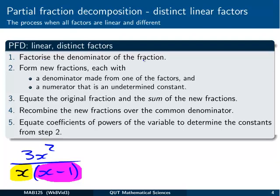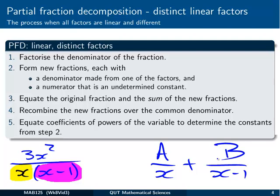So the process goes that we factorize the denominator, something like this. And then we form new fractions, each with a denominator made from one of those factors. So we'd have something over x and something over (x-1). And we're going to try to add them together. And when we have these linear distinct denominators, we have a constant on the top. A constant that we don't know what is yet, A and B let's call it. And our plan is to figure out what those are.